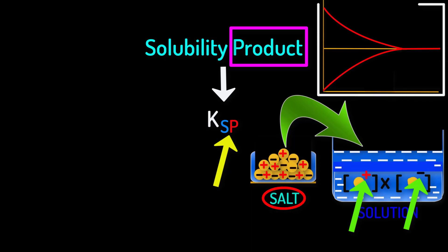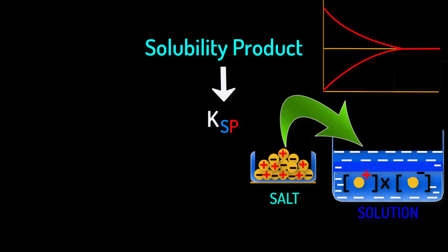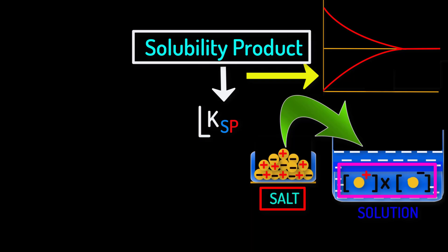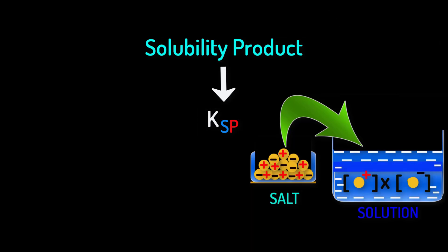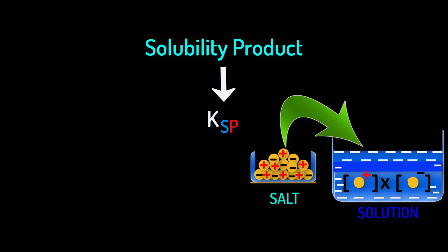Therefore, for solubility product we can say that the product of equilibrium concentrations of positive and negative ions of a dissolved salt is called solubility product KSP. The condition is that the coefficient — which is called the mole number of the ions — will be the power of the ions respectively. In short, we can say that KSP is the measure of solubility.